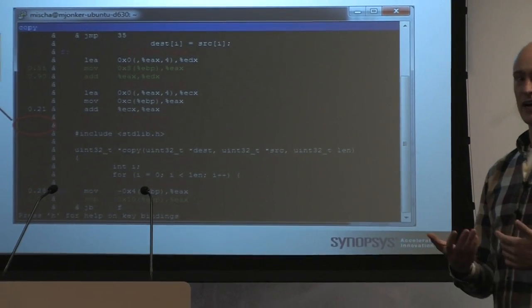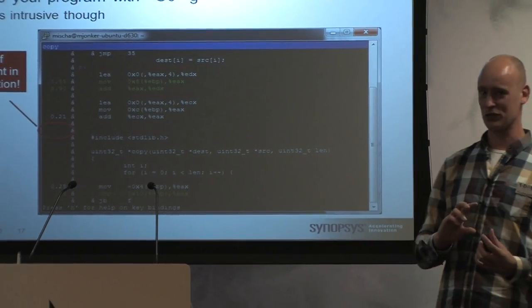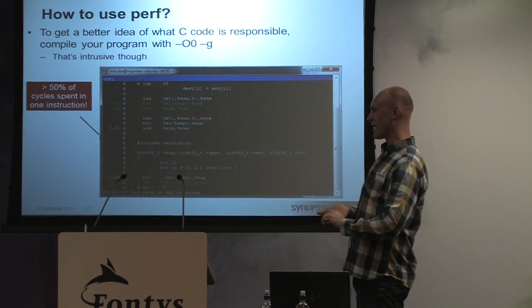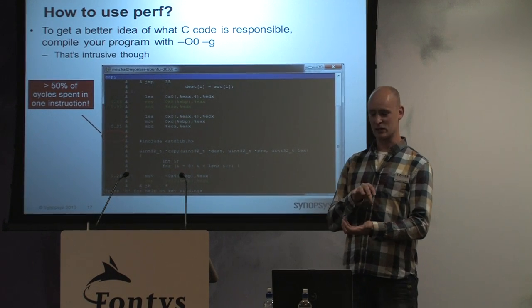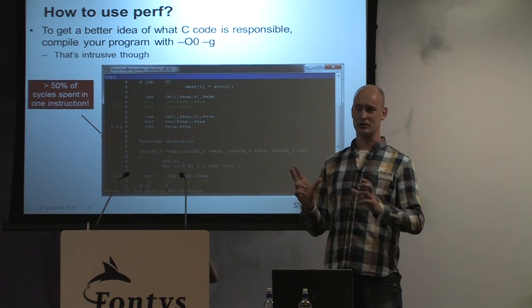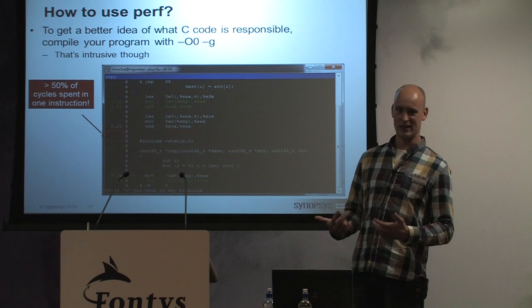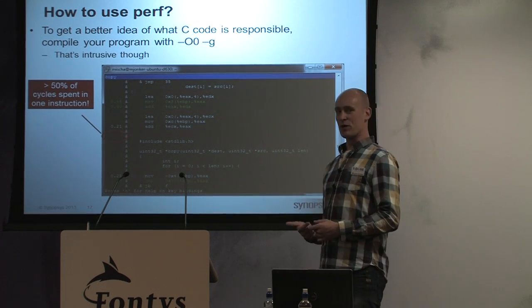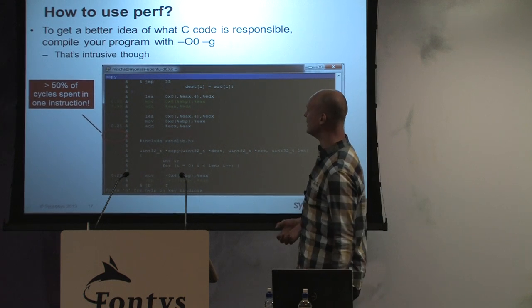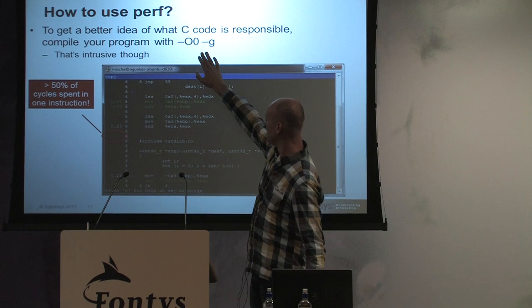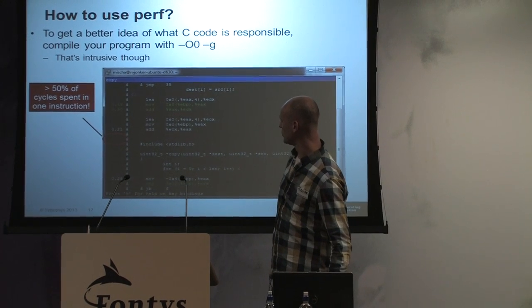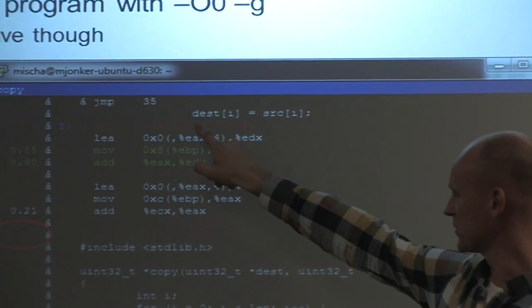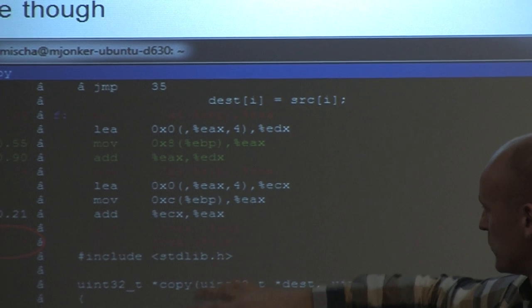When compiled with -O3 and no debug symbols, everything appears inlined into main, so multiple functions are not visible separately. Adding debug information makes the output more useful — here you can see that the C statement 'destination[i] = source[i]' is where most cycles are spent.